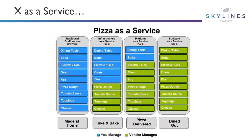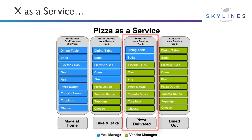As you move along and we look at something like take and bake, you're basically going to a store and picking up a frozen pizza or a freshly prepared one to take home. You're still responsible for your oven or your fire depending on how you're going to cook it, but you're not responsible for the toppings, the tomato sauce, or the pizza dough — that's already been prepared for you.